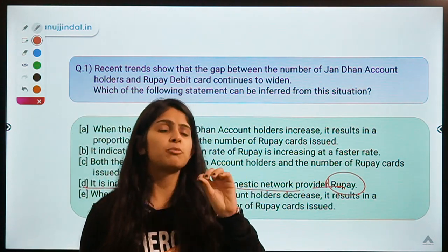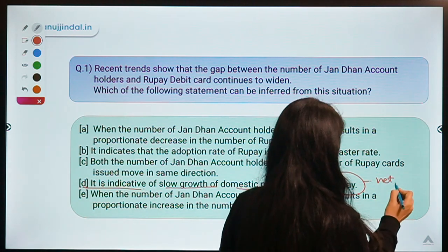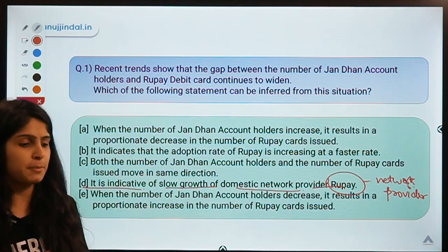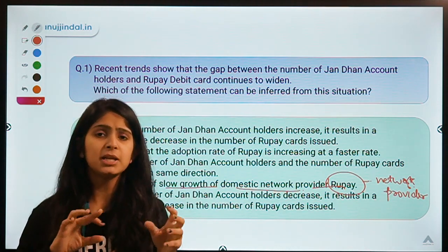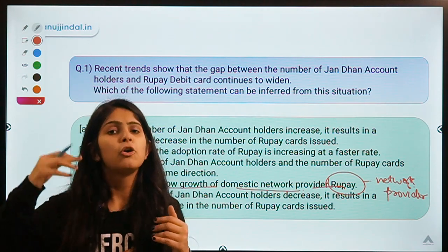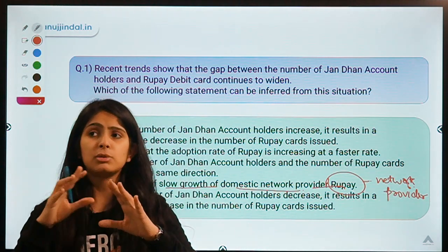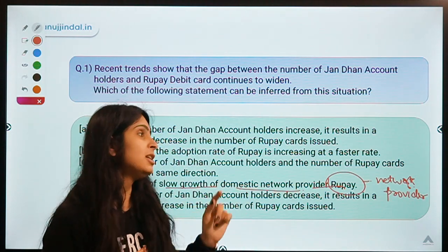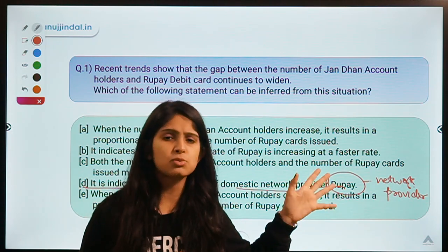First, you should understand the meaning of RuPay. RuPay is basically a network provider. If you conduct any transaction with your card — for example, shopping on Myntra or ordering from Amazon — you use your debit or credit card to make an online payment. You do not know which bank the receiver uses, and this gap is fulfilled by the network provider RuPay.